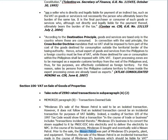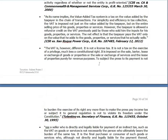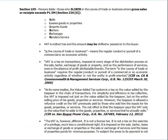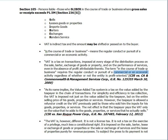VAT is a tax on transactions imposed at every stage of the distribution process. 'In the course of trade or business' requires the regular conduct or pursuit of a commercial or economic activity, regardless of whether or not the entity is profit-oriented. So as long as it is a commercial or economic activity, it would be subject to VAT if that activity is covered.